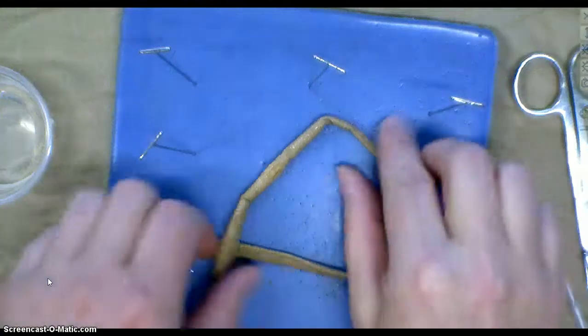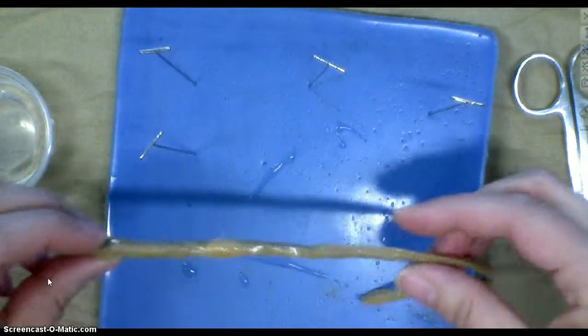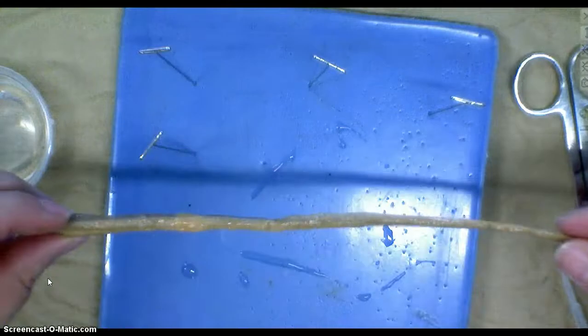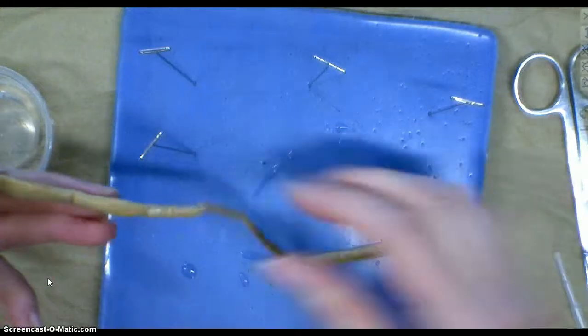All right, this is the beginning of what we would do for a dissection for a worm. So here is a worm. I've just pulled it out of the bucket.